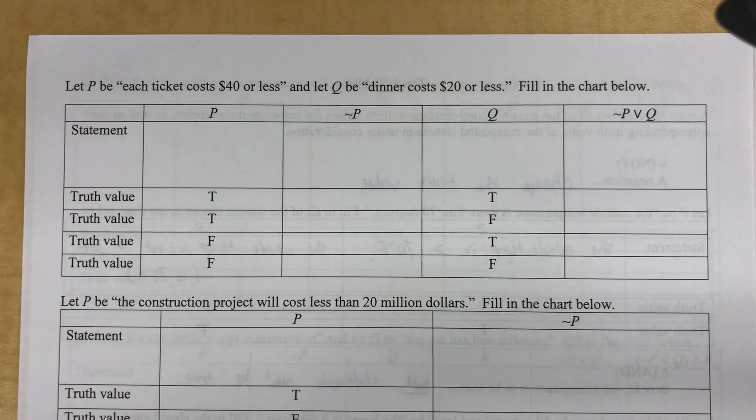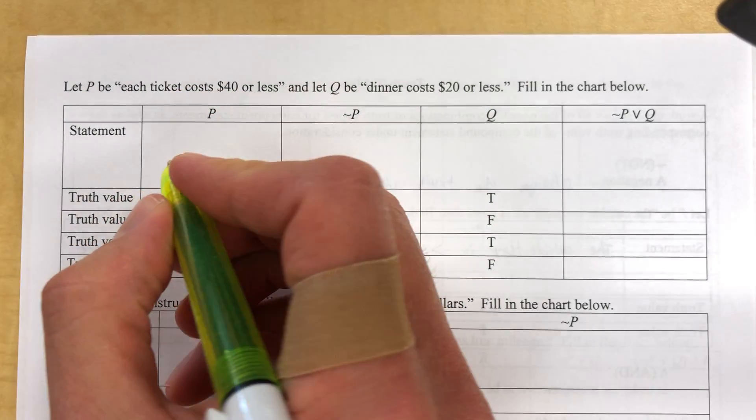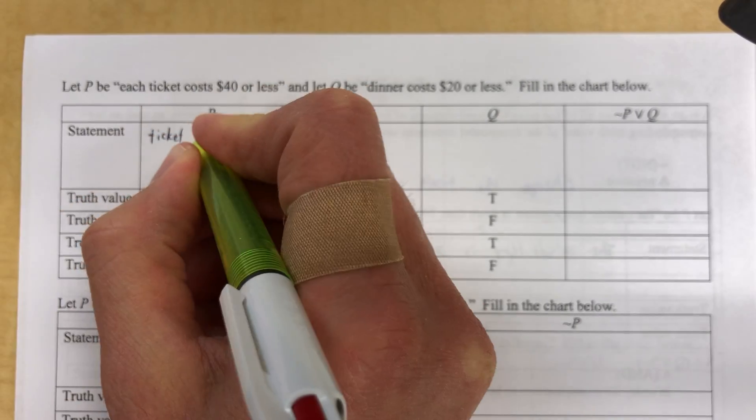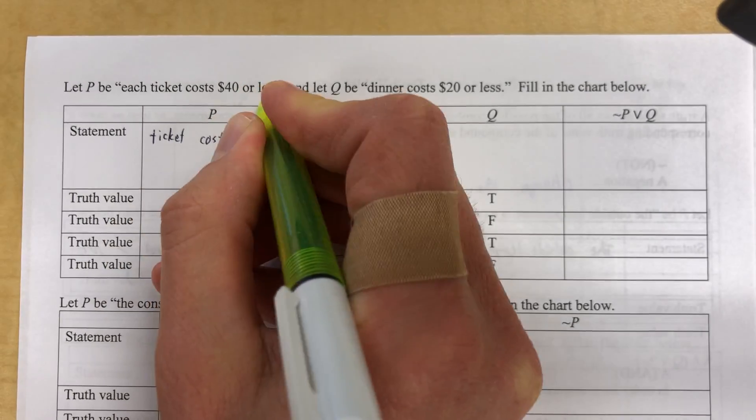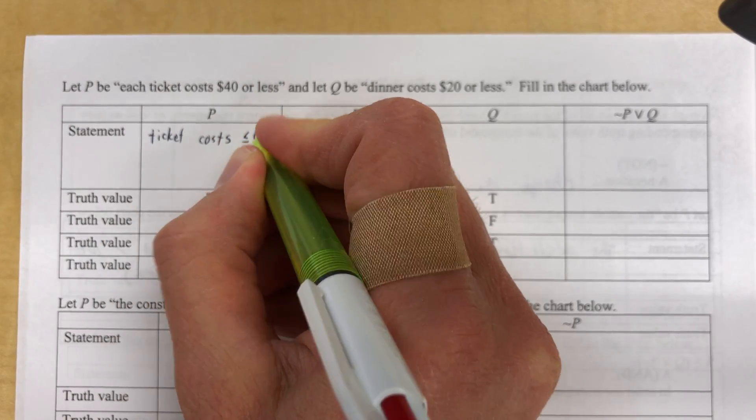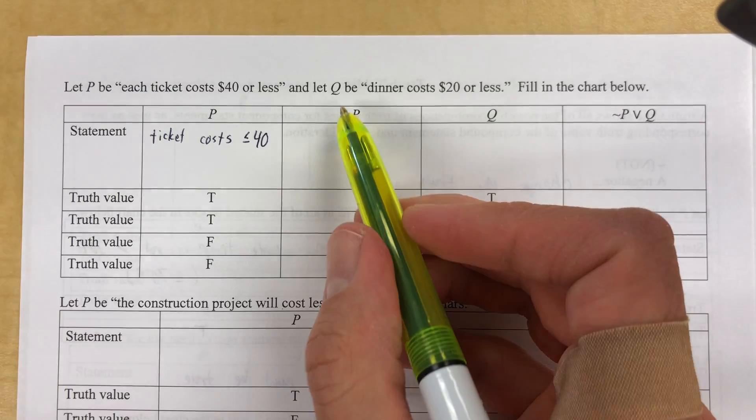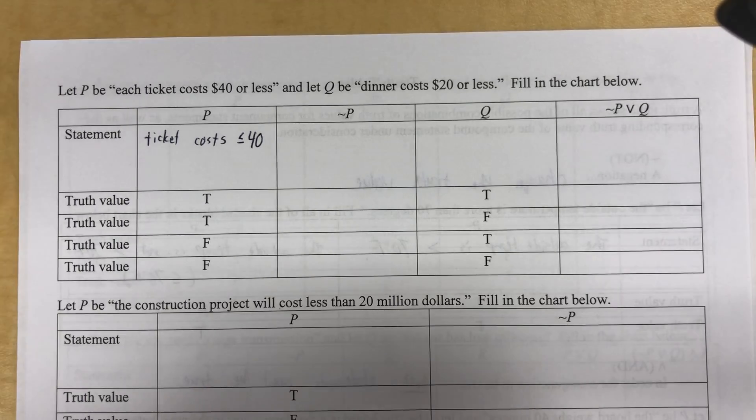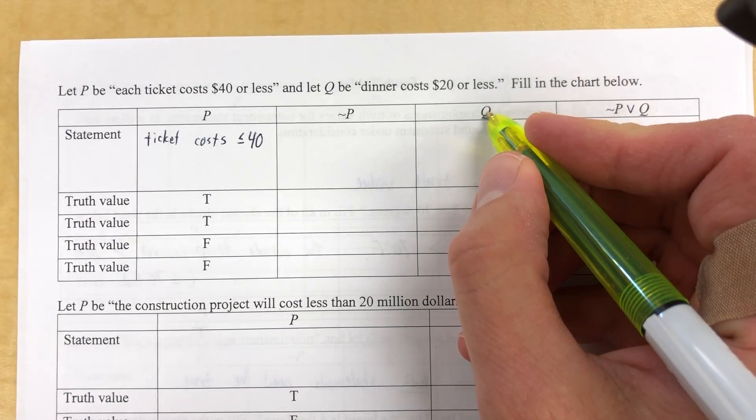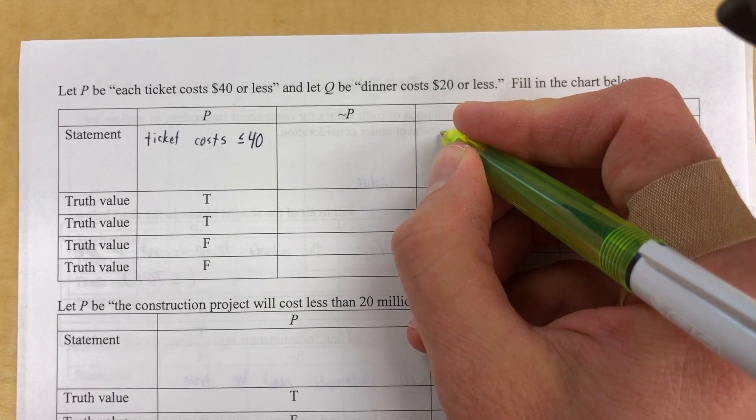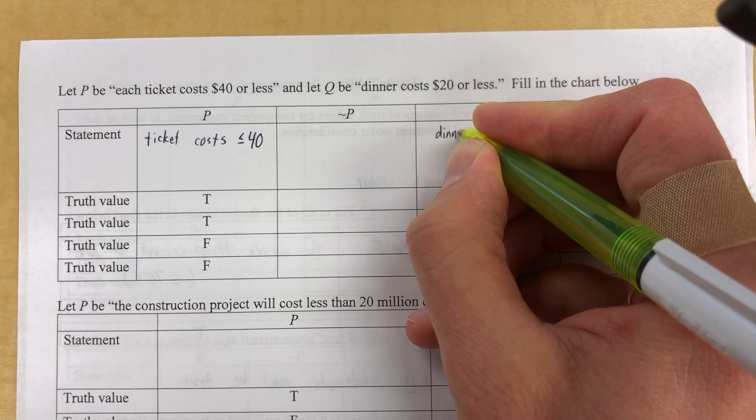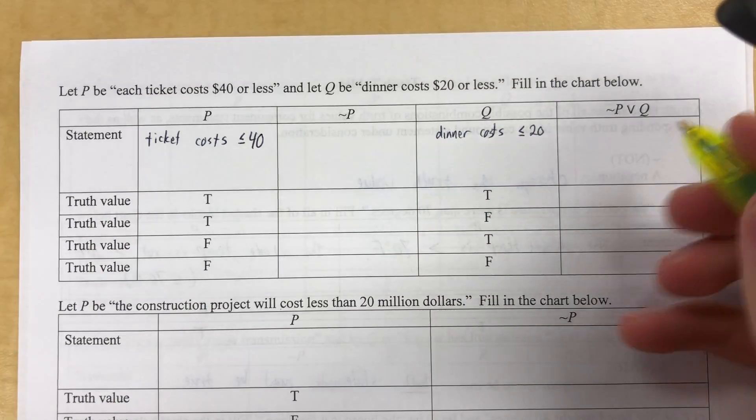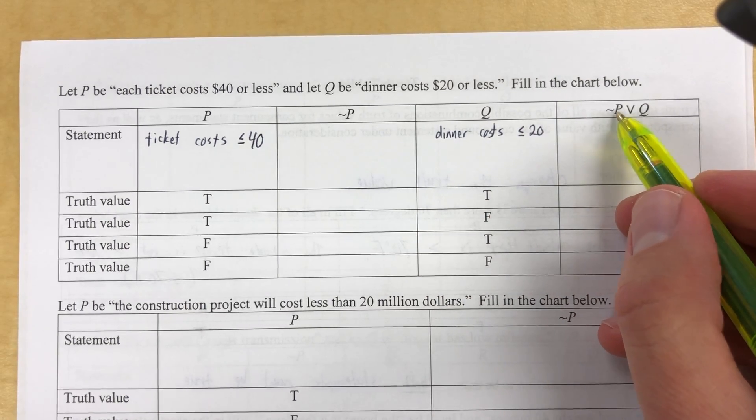All right, I'm going to use mathematical symbols a little bit more to abbreviate. So a ticket costs $40 or less, so less than or equal to 40. And Q is over here. Why is Q over here? Because I have another symbol here. All right, we're going to deal with that. Dinner costs $20 or less, so dinner costs less than or equal to $20.